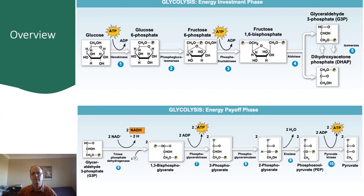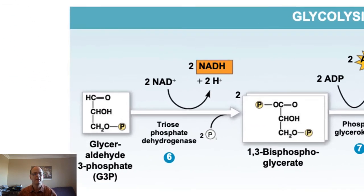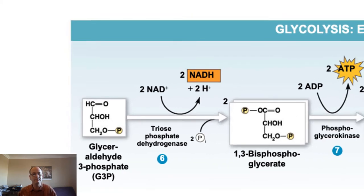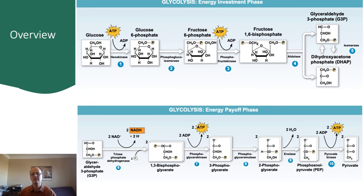To start thinking about fermentation, let's look back at glycolysis. Notice that step 6 here involves the reduction of NAD+ to NADH. In cellular respiration, as we learned, that NADH then makes its way into the mitochondria and to the inner membrane where it delivers the electrons to the electron transport chain.